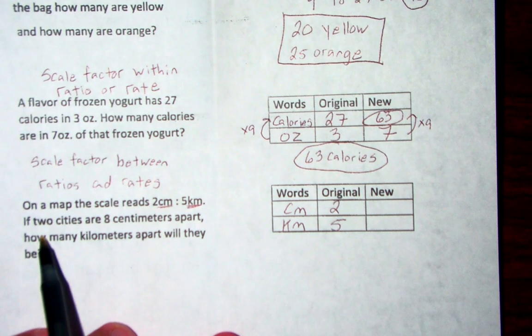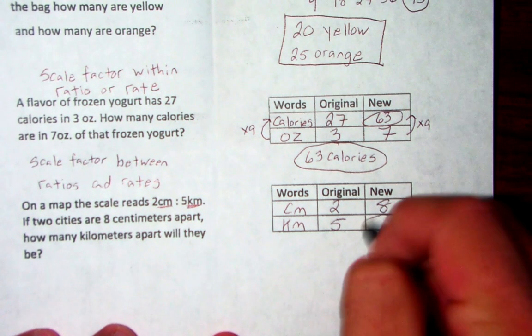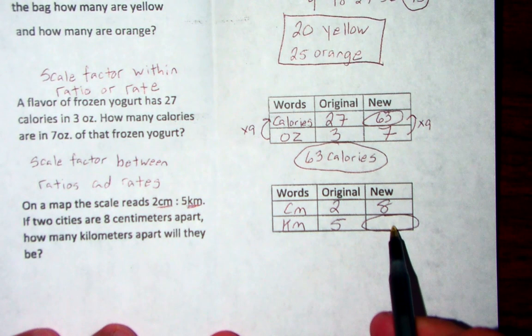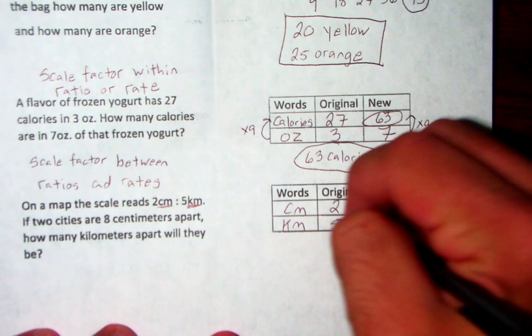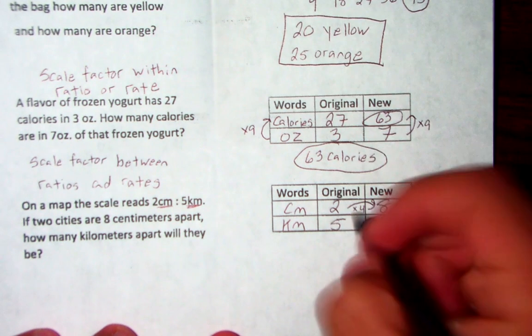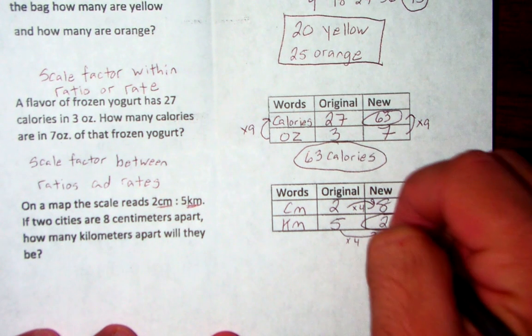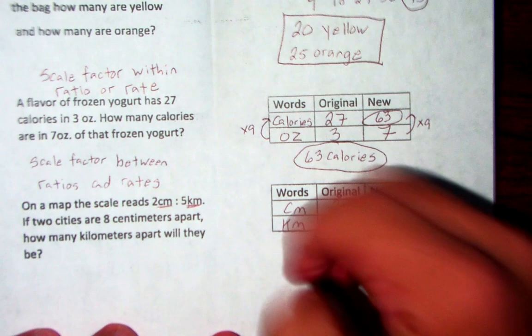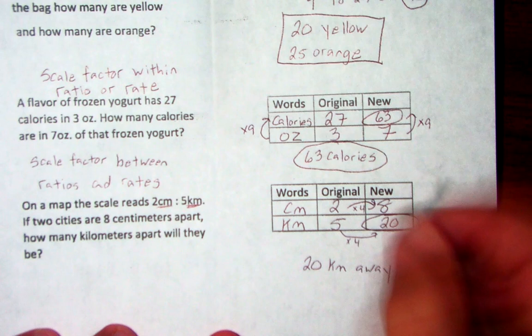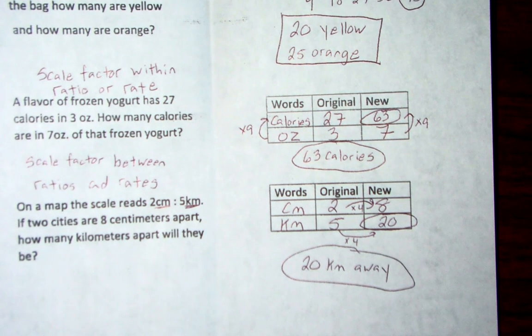If the two cities are 8 centimeters apart, how many kilometers? So we're solving for this one specific thing. Scale factor to go from 2 to 8, multiply by 4. 4. So 5 times 4 would give us 20. It is 20 kilometers away. Well that one was nice and easy. Alright, two more to go.